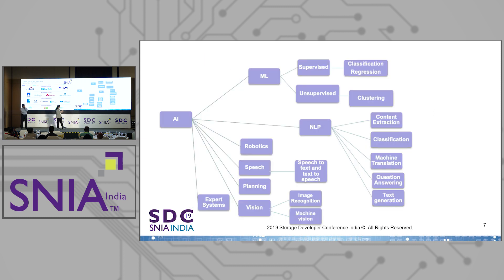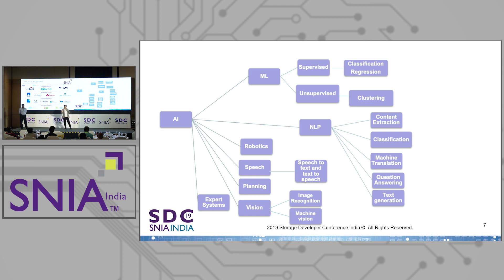Some of the key areas under AI: ML includes supervised and unsupervised learning. In supervised learning, you have known outcomes and map inputs to outputs to replicate the model elsewhere. In unsupervised learning, you don't have known outcomes but search for patterns in scattered data.